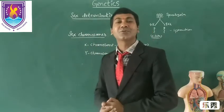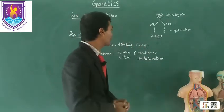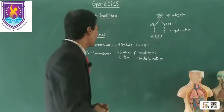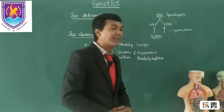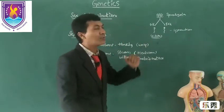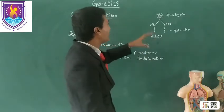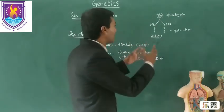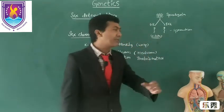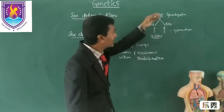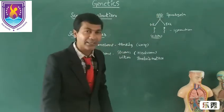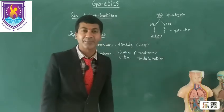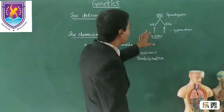The knowledge of sex chromosomes was first obtained from the scientist Henking. When Henking was doing his experiments on wasp spermatogenesis, he observed that spermatogonia undergo meiotic division and produce haploid spermatozoa. He observed that 50% of spermatozoa received a special type of genetic material, whereas the other 50% of spermatozoa did not receive any type of genetic material. He named it the X body.